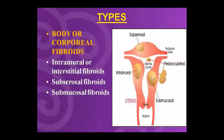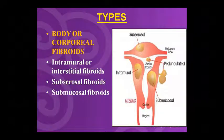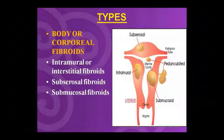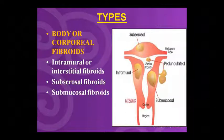Looking at the diagram: fibroid within the uterine wall is known as intramural fibroid — you can see it in the picture within the uterine wall. Submucosal fibroid protrudes into the endometrial cavity — it is protruded into the endometrial cavity, as shown in the diagram.